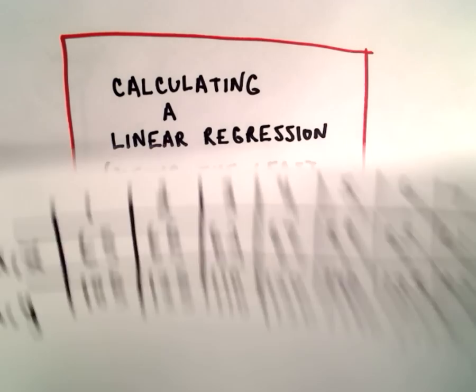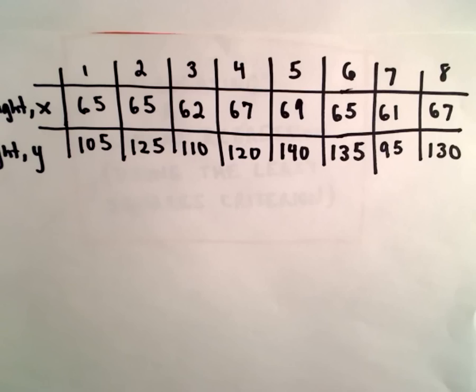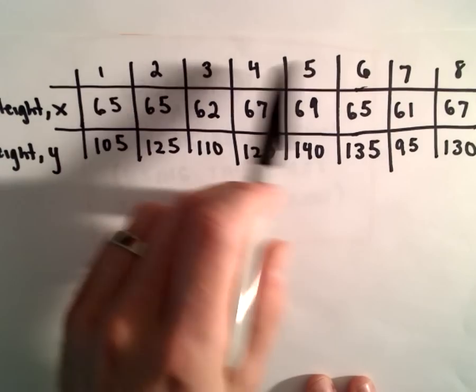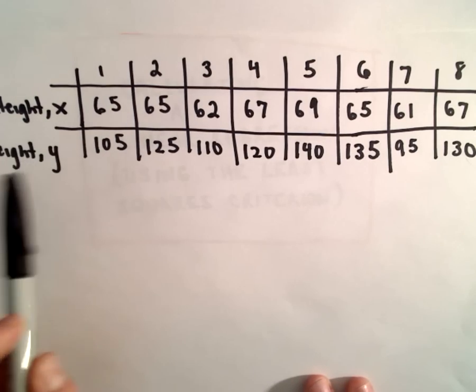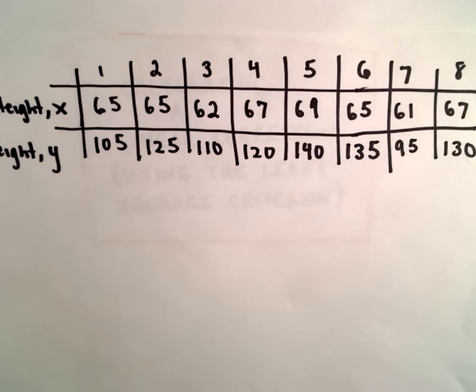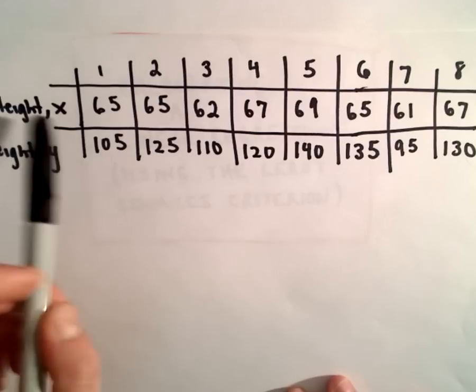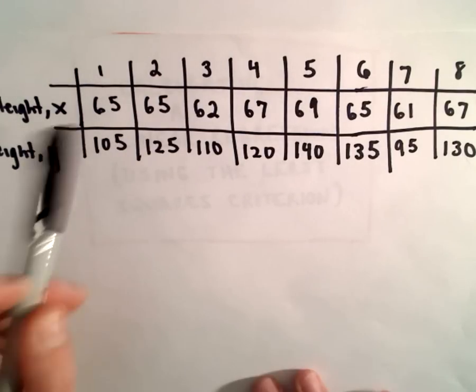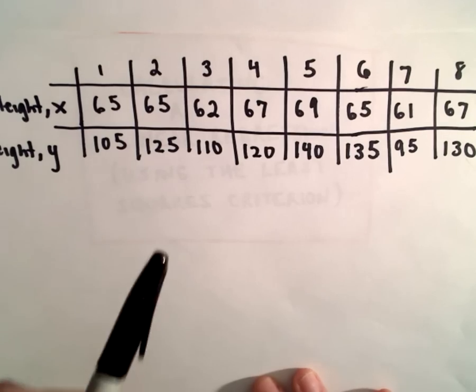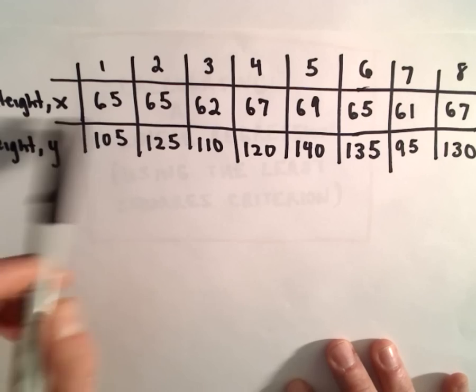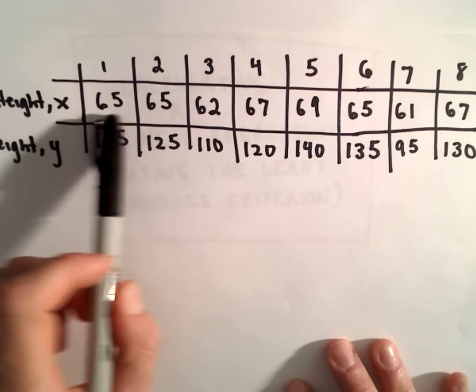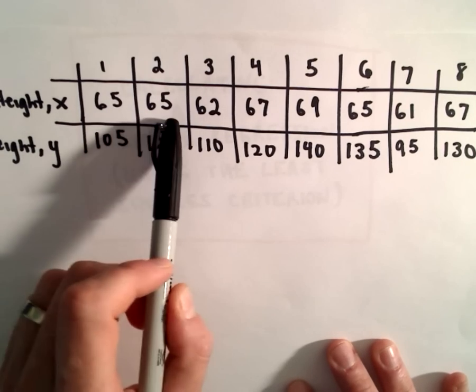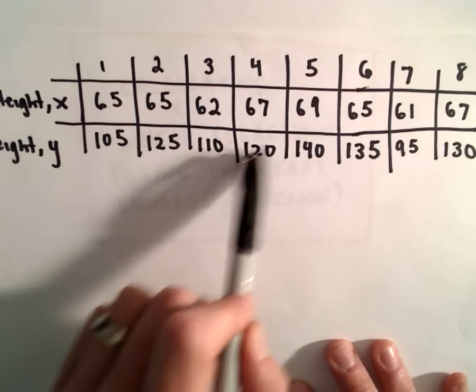So suppose we collect some data points. Suppose I go out there and I find eight people one, two, three, four, five, six, seven, eight, and I record their height and their weight. I have left units out, pick whatever units you want, maybe this is inches and pounds, or centimeters and pounds. So person one, they have a height of sixty-five inches and they weigh a hundred and five pounds, and the same thing the second person, 65 inches, 125 pounds, etc.